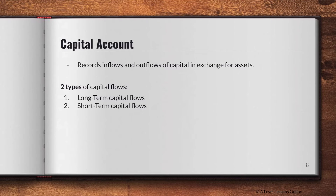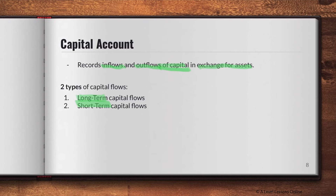Next is the capital account. As the name suggests, it records the inflows and outflows of capital in exchange for assets. Your capital account consists of two types of capital flows: long-term capital flows and short-term capital flows. This is the part where many students get confused, so pay close attention to clarify any doubts.